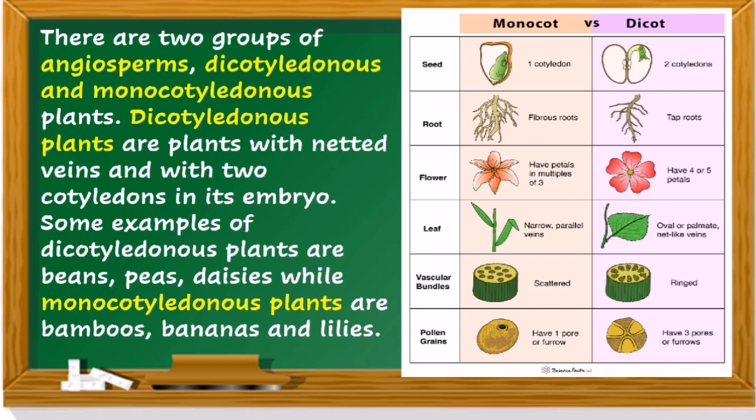Dicotyledonous plants are plants with netted veins and with two cotyledons in each of their embryos. Some examples of dicotyledonous plants are beans, peas, and daisies. While monocotyledonous plants include bamboo, bananas, and lilies.